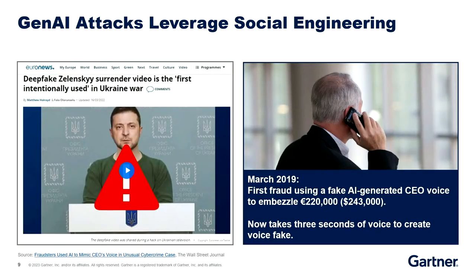How does generative AI make it easier? It now takes about three seconds of voice to impersonate your voice — it used to take 60 to 90 minutes. If you have your voice anywhere on the internet, a criminal can take it and use it for social engineering. They can also go to lots of websites for deepfakes. For example, they made a deepfake of Zelensky telling citizens to surrender. So this is quite dangerous.